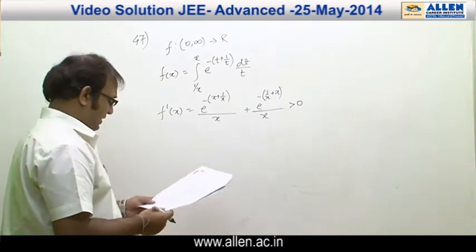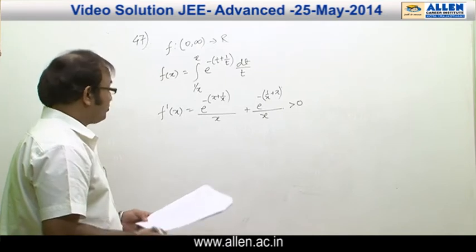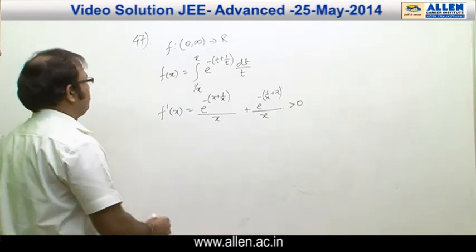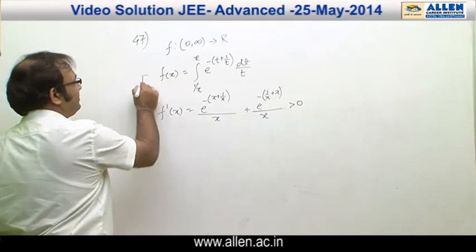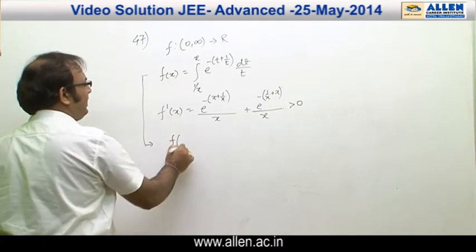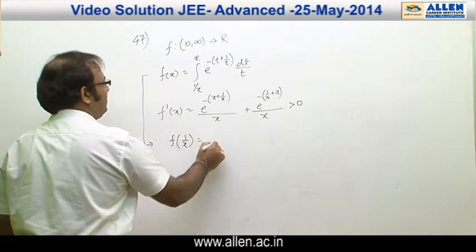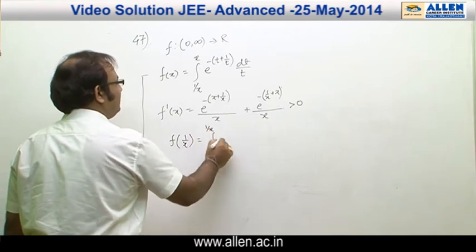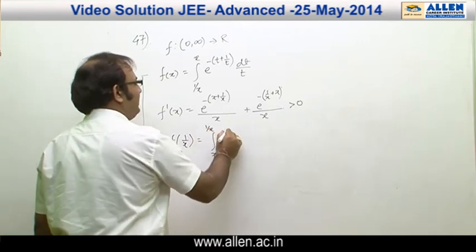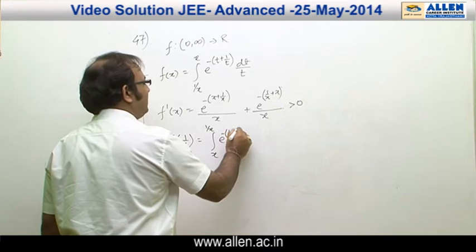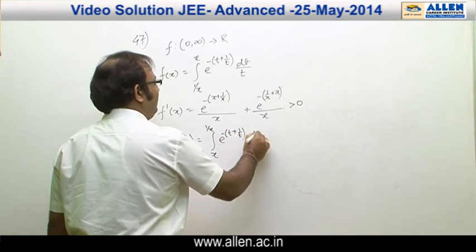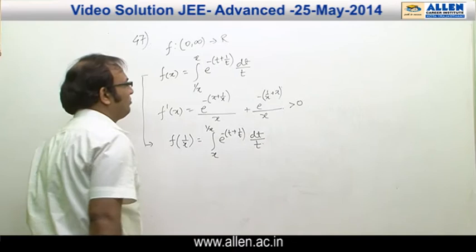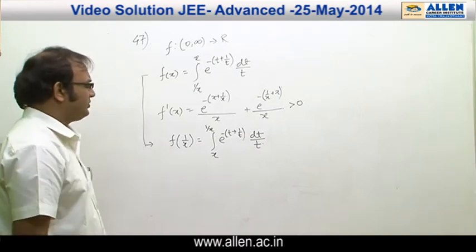Now for option C, f(x) + f(1/x) has to be calculated. If this is f(x), then f(1/x) = ∫ from x to 1/x of e^(−t + 1/t) / t dt.